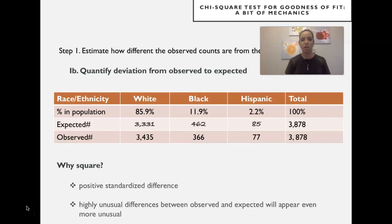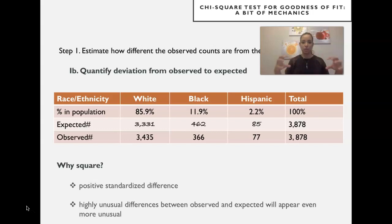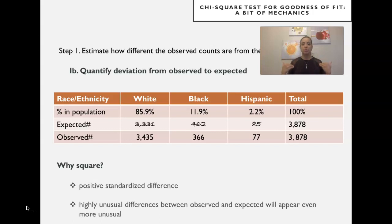Hi everybody. We are in week 11 of Graduate Statistics. This is Video Lecture 2. We're working with an analysis to answer the following question: Is the race distribution in the juries of a county in Ohio the same or different from the distribution of races in the population at large?